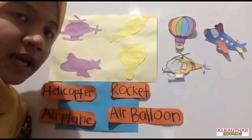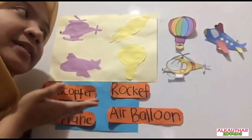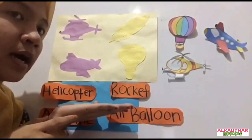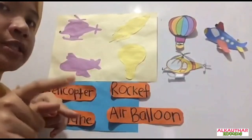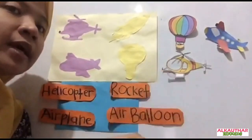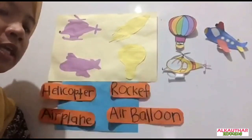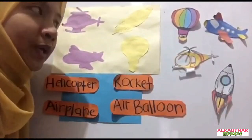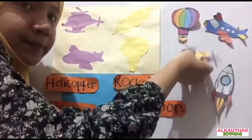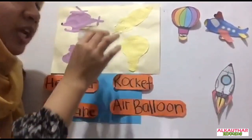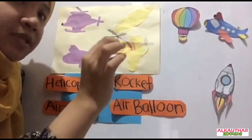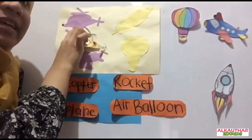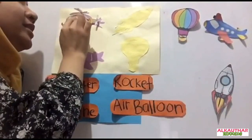Now, teacher will show you one activity that we are going to do. It's called Mix and Match. Can you see this? How to play this game? You just have to choose the transports and match it here. Do you guys ready? Let's start! Teacher wants to pick this picture. What do you think the shape of the picture? Yes! It is a helicopter! Teacher puts it here.